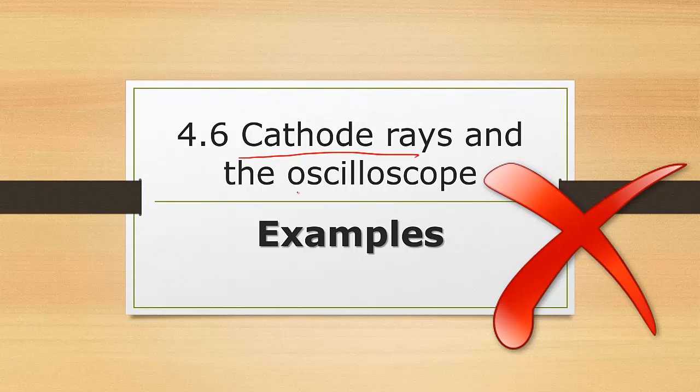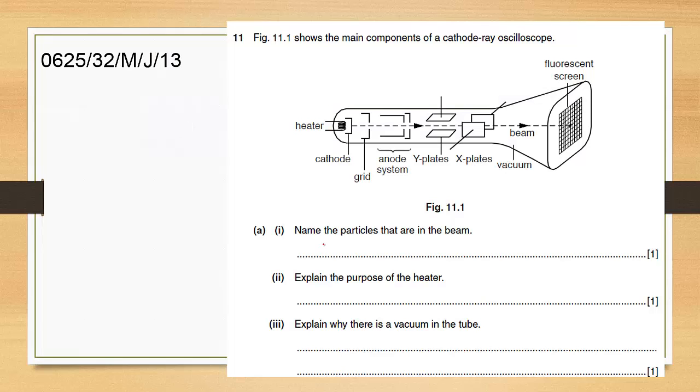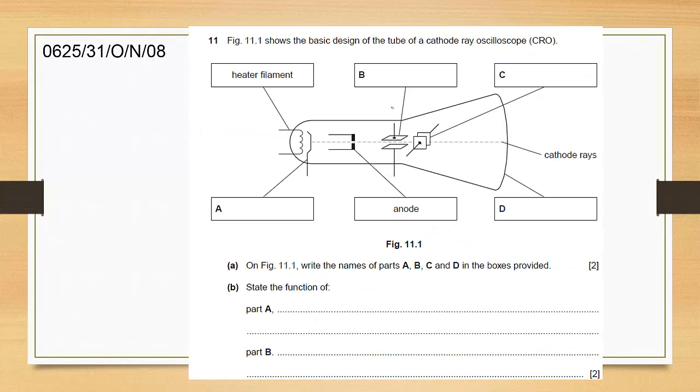For cathode ray and oscilloscope, here are some examples. For cathode ray, it's very simple, usually they will tell you, and also this is how it looks like. Yeah, that's how it looks like. And also here is another example, sometimes you also work with the oscilloscope.